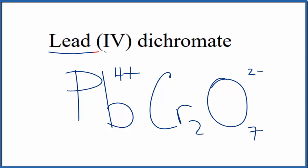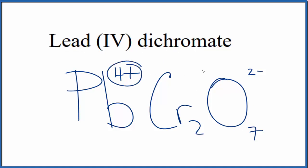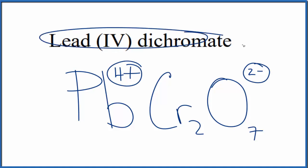Lead is a metal — it's a transition metal — and the dichromate ion is a group of nonmetals. So we have this metal and these nonmetals; this is an ionic compound. These charges need to add up to zero, because lead(IV) dichromate is neutral — it doesn't say 'ion' after it.